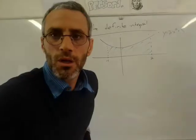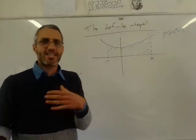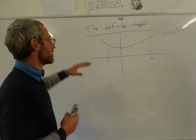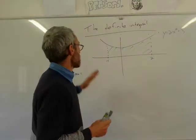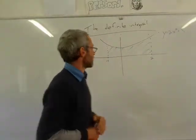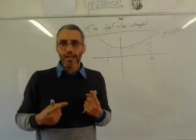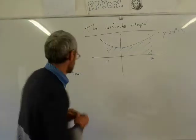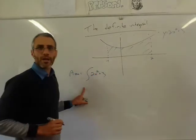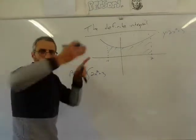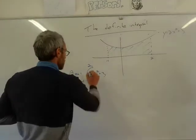A couple more examples. Often you'll be asked: there is a curve y equals 2x² plus 3, find the area between that curve and these two vertical lines x equals minus 1 and x equals 2. Then you need to calculate the definite integral of 2x² + 3 with limits between minus 1 and 2, and then put dx.